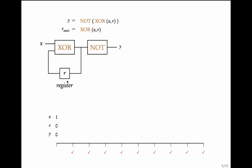Let us look at a sample execution of this circuit. Assume initially R is 0 and X is 1. The value of Y is NOT of XOR of 1 and 0. XOR of 1 and 0 is 1, and NOT of 1 is 0. The next value of the register is XOR of 1 and 0, which is 1. So the register value changes to 1. By that time the value of X, which is an external input, could either be 0 or 1 — we do not know.